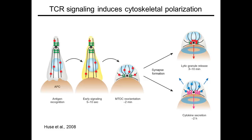T-cells adopt an extended migratory configuration as they search for cognate antigen in lymph nodes and tissues. Antigen recognition on the surface of an antigen-presenting cell, or APC, induces the formation of a stereotyped junction between the two cells, known as an immunological synapse.